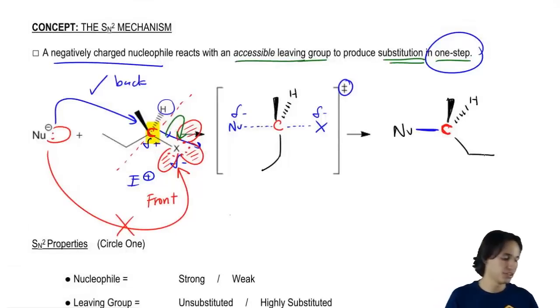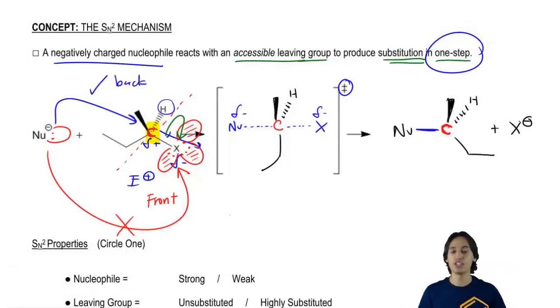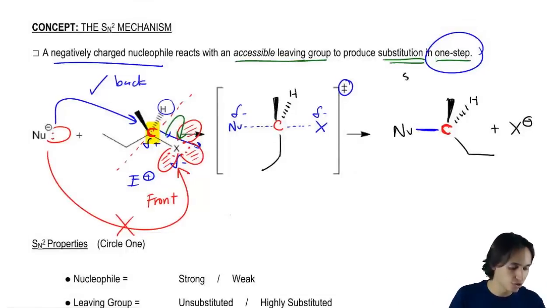Our leaving group. So our leaving group is going to get X negative. So first of all, how can I tell that a substitution reaction just took place? Well, I can tell because things substituted. Before I had a carbon with an X, now I have a carbon with a nucleophile. Before I had a nucleophile with a negative, now I have an X with a negative. See how everything perfectly swapped? So this is definitely substitution.